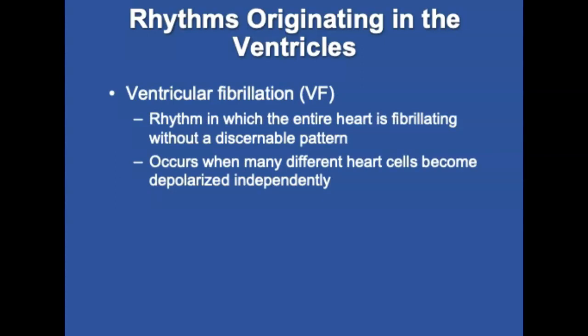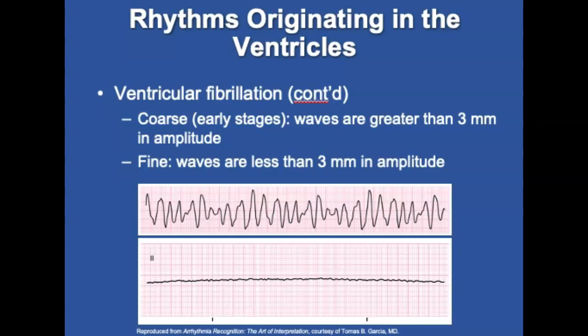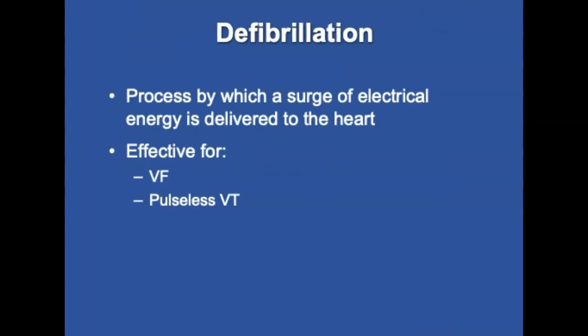Ventricular fibrillation (V-fib) is a rhythm in which the entire heart is fibrillating. It occurs when many different cells become depolarized independently rather than from an SA node impulse. There are no P waves, no PR interval, and no organized complexes. When fibrillation waves are greater than 3 mm in amplitude, the dysrhythmia is called coarse; when less than 3 mm, it is called fine V-fib. Defibrillation is effective for V-fib and pulseless V-tach. It delivers a current powerful enough to depolarize all of the heart's myocardial cells; when the cells repolarize after the shock, they should respond to an impulse from the SA node and begin to organize again.